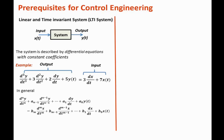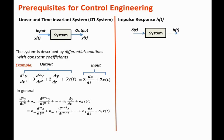Let's define the impulse response of a system h(t). The impulse response h(t) is the response — or output — of the system when the input is the impulse signal δ(t). If we apply δ(t) to the system, the output is called the impulse response h(t). Note that h(t) is a signal; it is the output to the impulse input — the word 'response' means output.